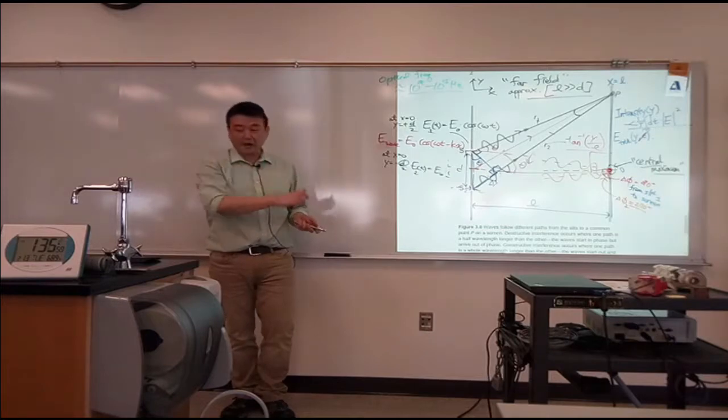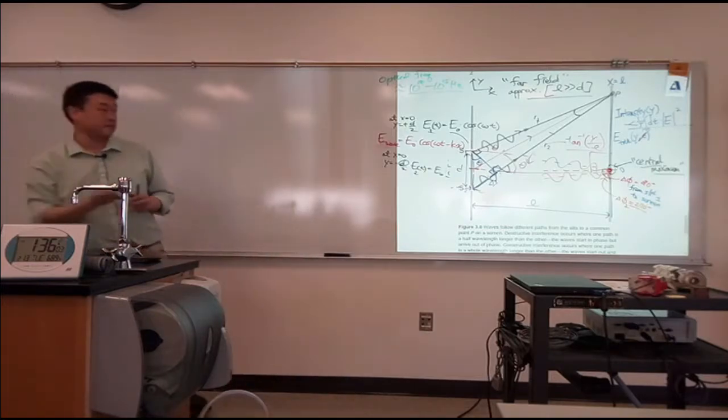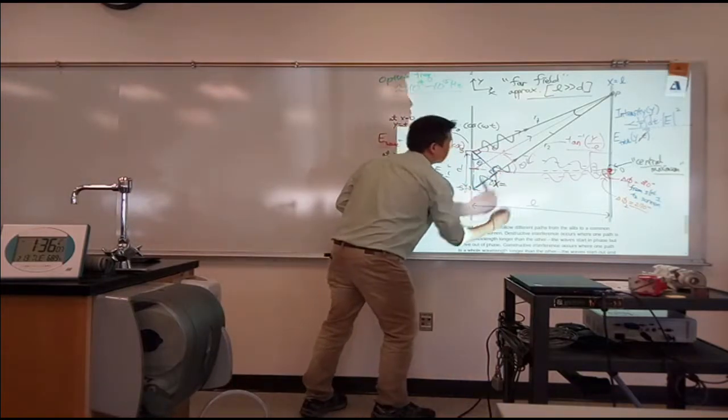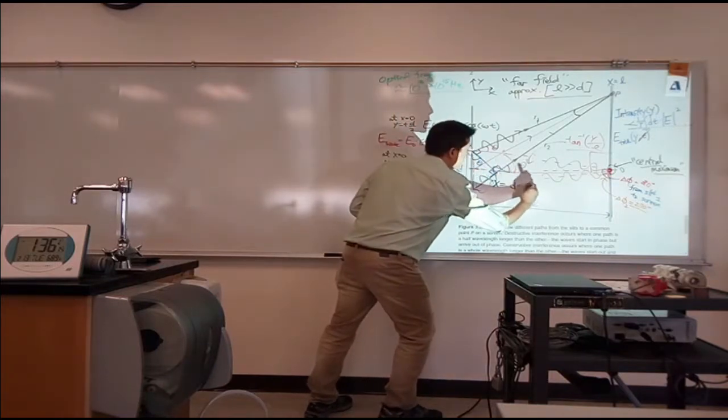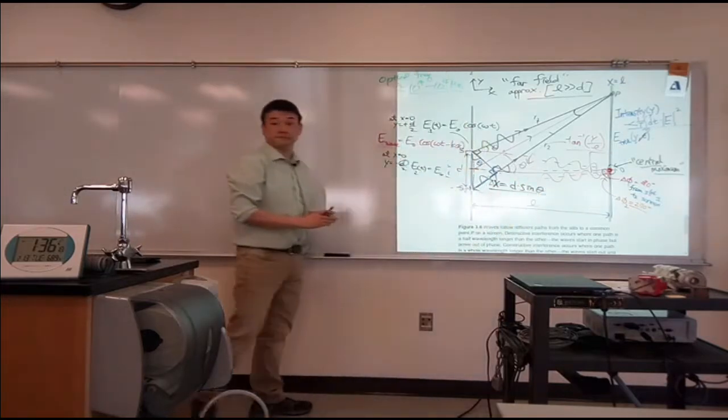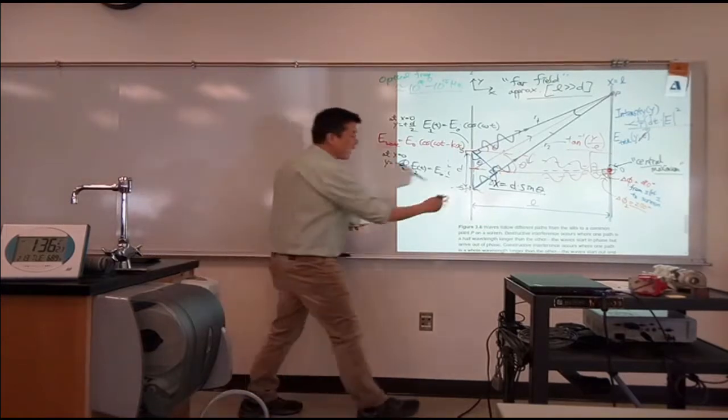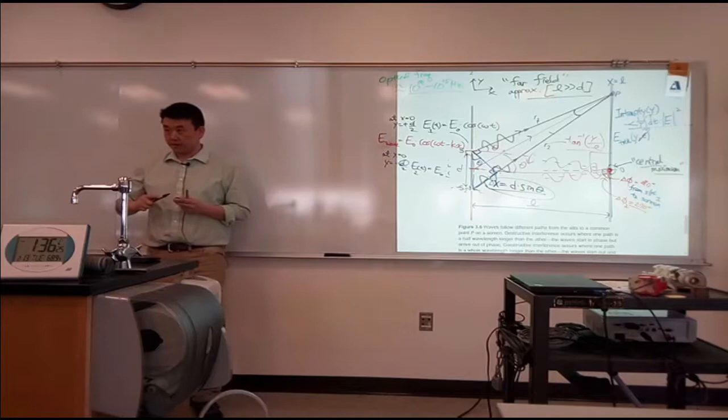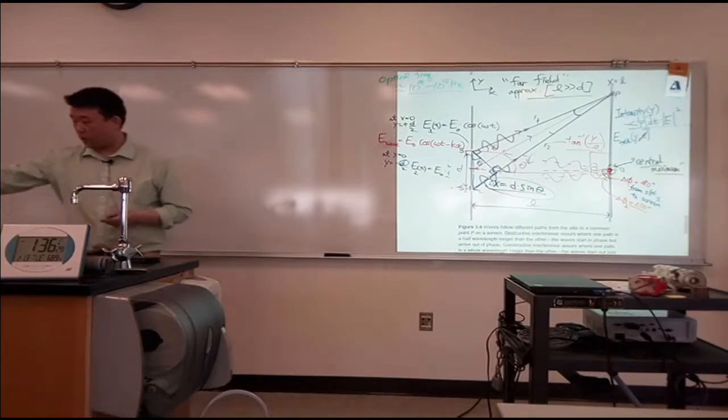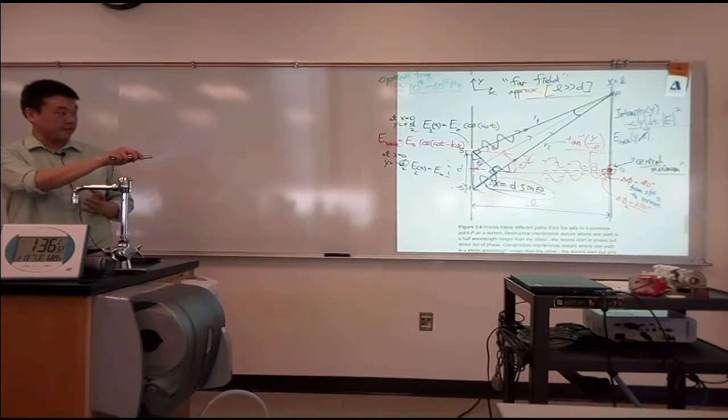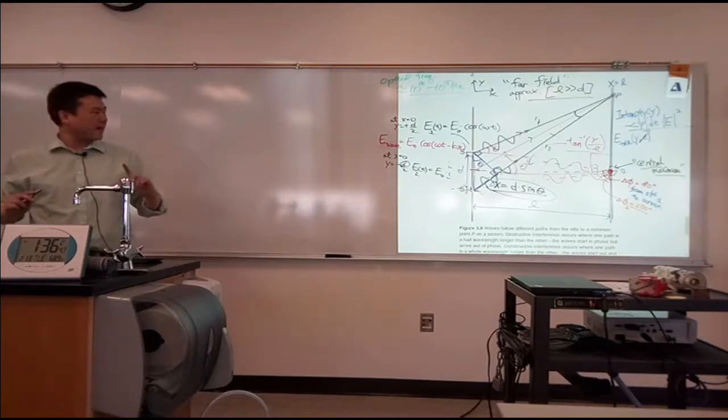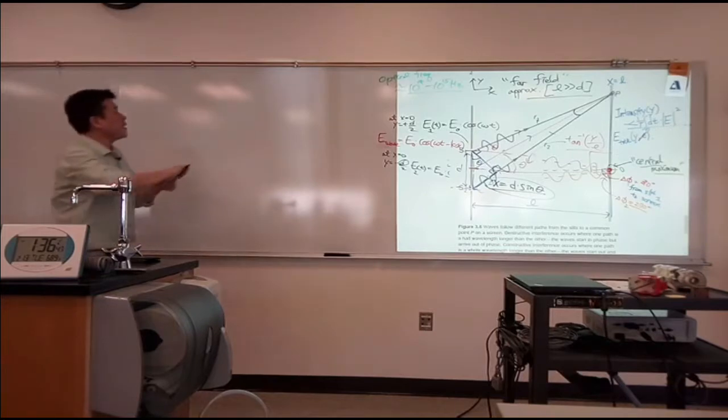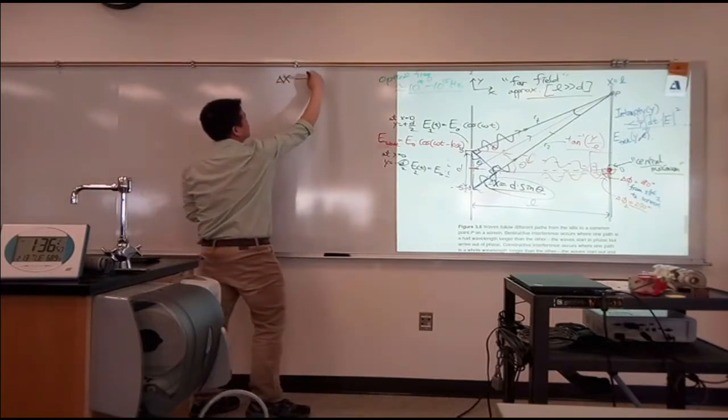So all of this geometric argument is leading us to give us this expression. This path length difference is equal to, well, I have the hypotenuse, D. I have the opposite angle. So it should be D times sine theta. And all the other formulas you will see for double slit interference, it comes out of these two things. One, the path length difference for path from each slit to the particular point on the screen. And how this path length difference relates to phase difference.